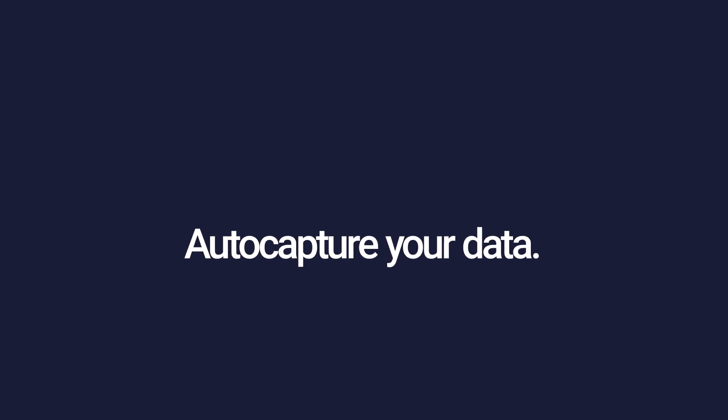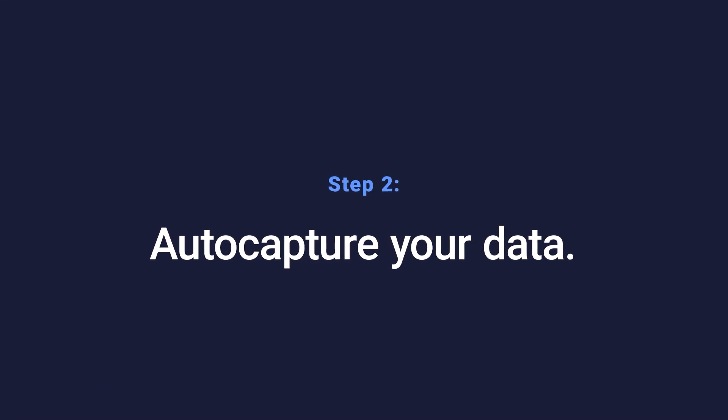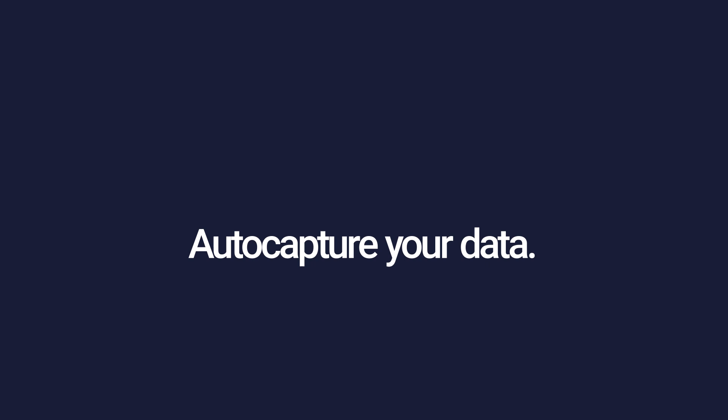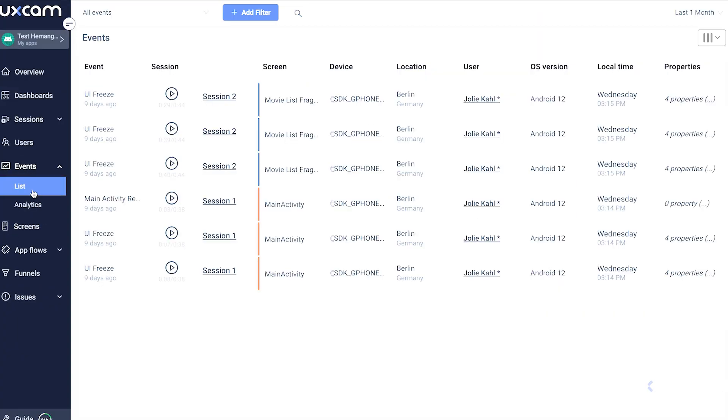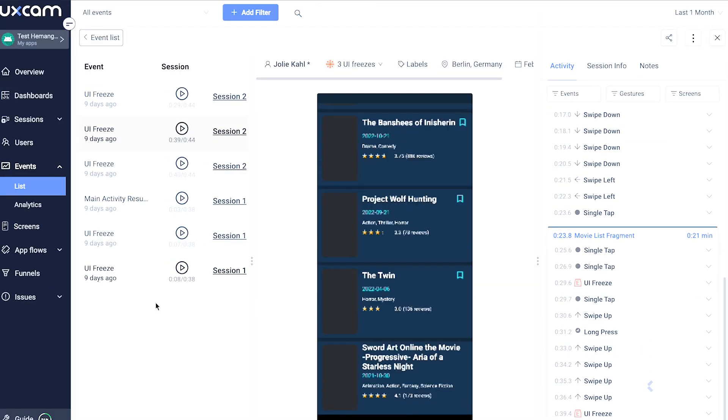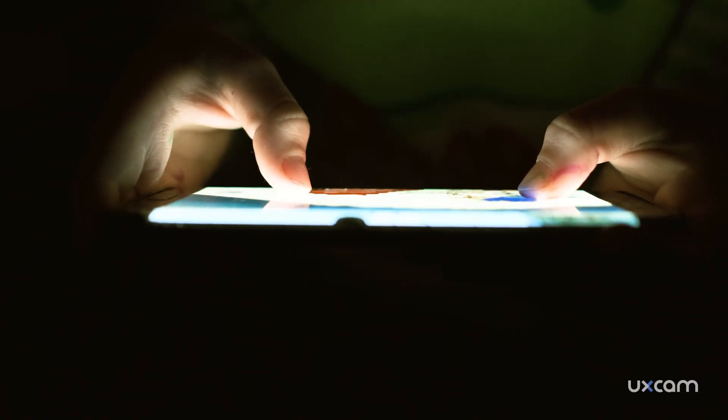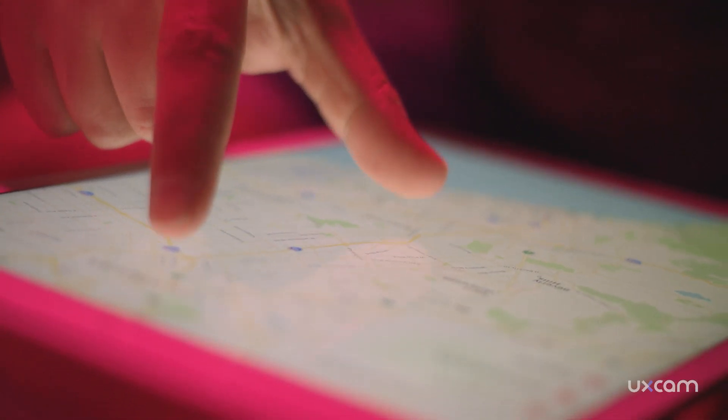Step two: auto capture your data. Now that everyone knows nothing, it's time to gather the entire user experience. If you haven't already seen it, check out my video on auto capture. When you use a mobile app analytics tool with auto capture, you're able to look at the mobile app experience through a scientific lens. Since everything is captured, you'll be able to objectively observe your user and build credible, testable hypotheses.